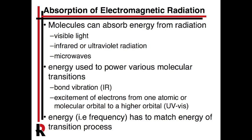Depending on the type of radiation, it can correspond to different kinds of transitions. For instance, infrared, which we normally think of as heat, normally involves an increase of bond vibration. When we talk about UV-vis, we're talking about the excitation of electrons from one energy level — a sigma bonding orbital, a pi bonding orbital, or a d orbital — to a molecular orbital of higher energy. This takes energy, and that excitation is provided by the absorption of radiation.